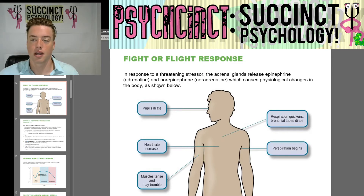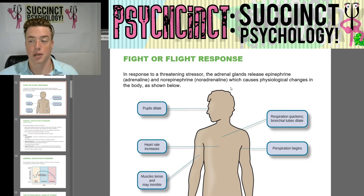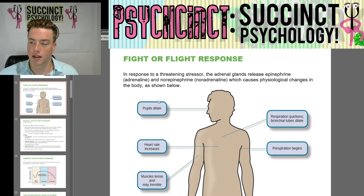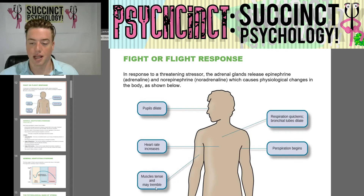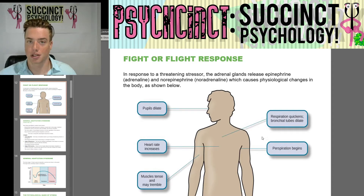In response to a threatening stressor, the adrenal glands release epinephrine — or adrenaline — and norepinephrine, or noradrenaline, which causes physiological changes in the body. With adrenaline, your pupils dilate, heart rate increases, muscles tense and may tremble, respiration quickens, bronchial tubes dilate, and perspiration begins.